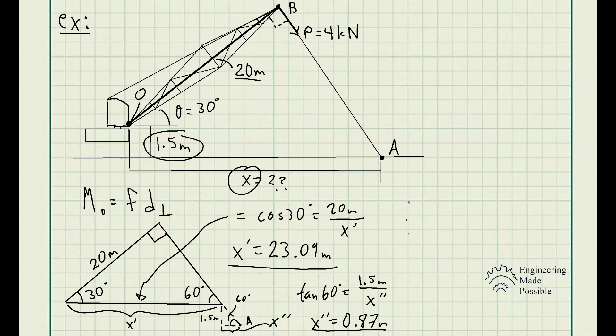So now, finally, our full distance X is basically the addition of these two: X double prime as well as X prime. So we just add them up, and finally our distance X, which maximizes this moment, is 23.96 meters.